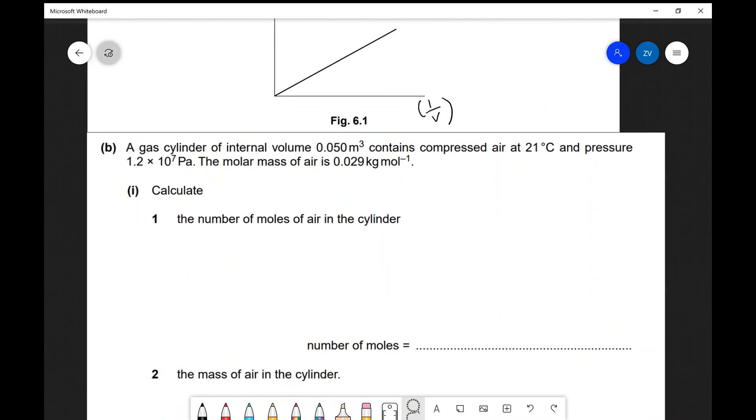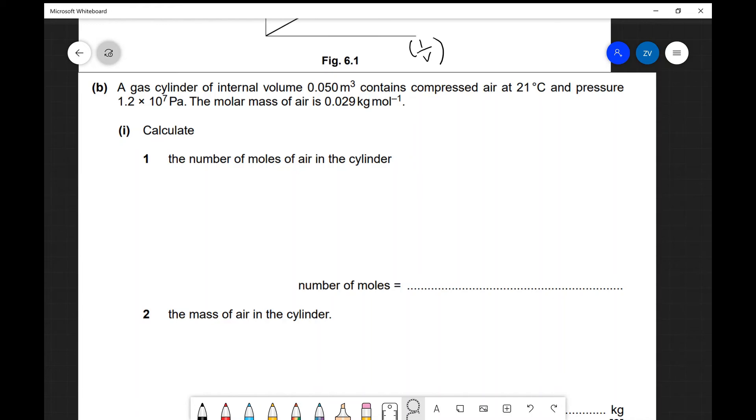Part B: We have a gas cylinder internal volume of 0.05 cubic meters containing compressed air at 21 degrees C and a certain pressure. Calculate the number of moles of air in the cylinder. This question seems to be a straightforward application of PV equals nRT. We know the pressure, the volume, we know what R is (8.31 from our formula booklet), and we know the temperature. We just need to be careful not to forget to convert that temperature to Kelvin. Let's first rearrange for n, because that's what we're looking for, the number of moles. So n is going to equal PV divided by RT.